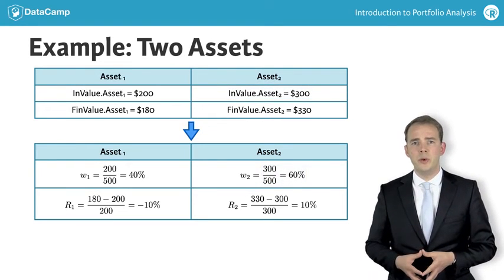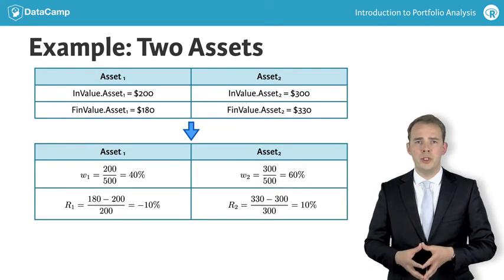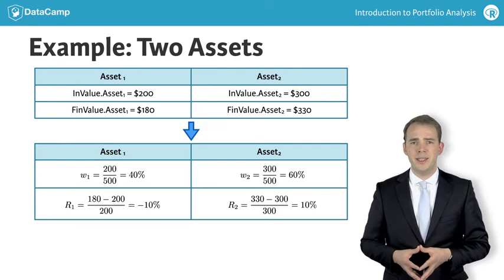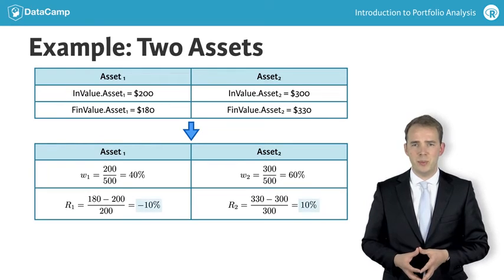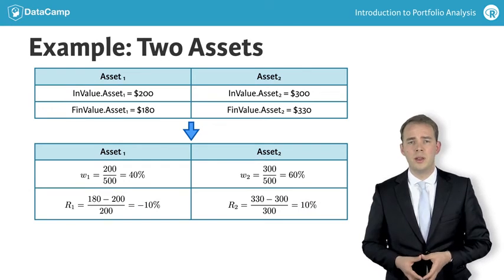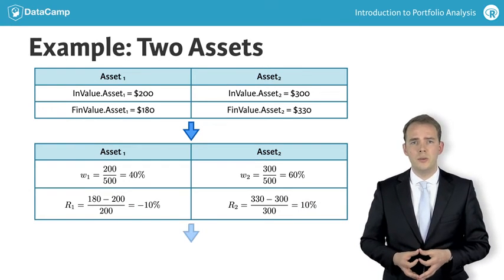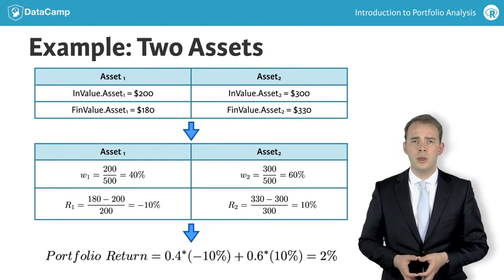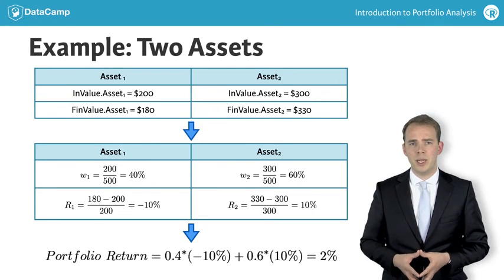Then, in the second step, we need to compute the returns for each of the assets. For asset 1, we obtain that the individual return is minus 10%, while for asset 2, the return is plus 10%. Finally, we can combine those results and compute the portfolio return by summing over the weights multiplied by their respective returns.